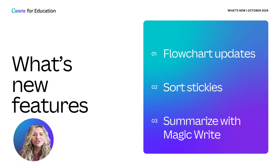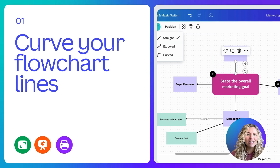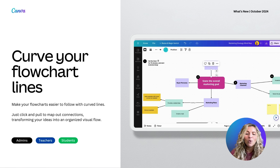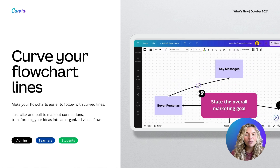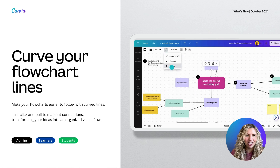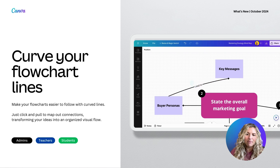Let's kick it off with our What's New features. Today we're going to dive into flowchart updates, sort stickies, and summarize with Magic. First: curve your flowchart lines. Did you know Canva has whiteboards where you can unleash your creativity and collaborate seamlessly — whether you're brainstorming, strategizing, or planning a project? Our infinite workspace makes teamwork and collaboration not only easier but more enjoyable and engaging. With Canva's latest flowchart updates, you can enhance your flowcharts with curved lines for easier readability — just click and pull to map out connections and transform them into an organized visual flow.